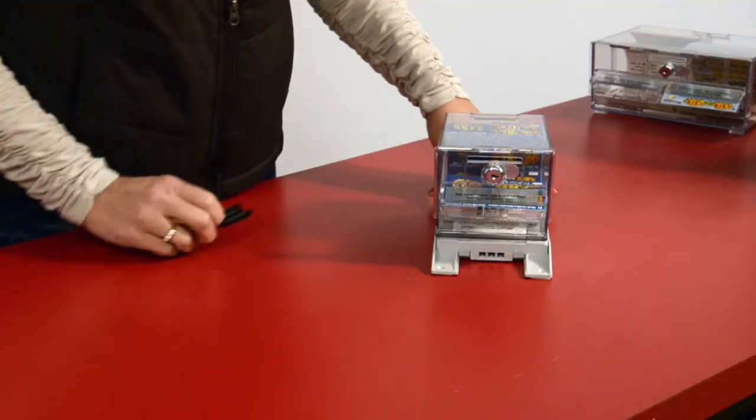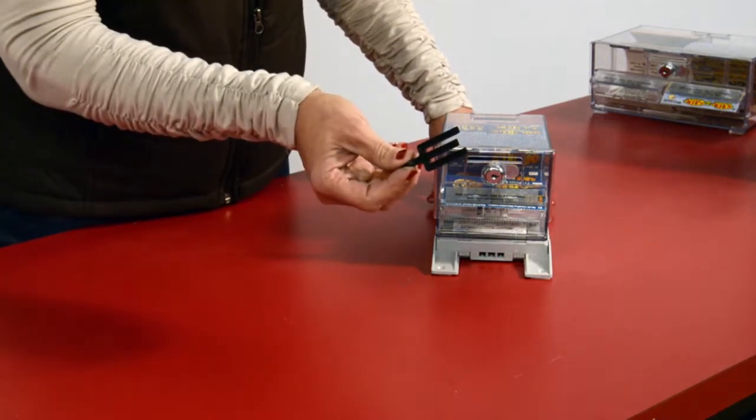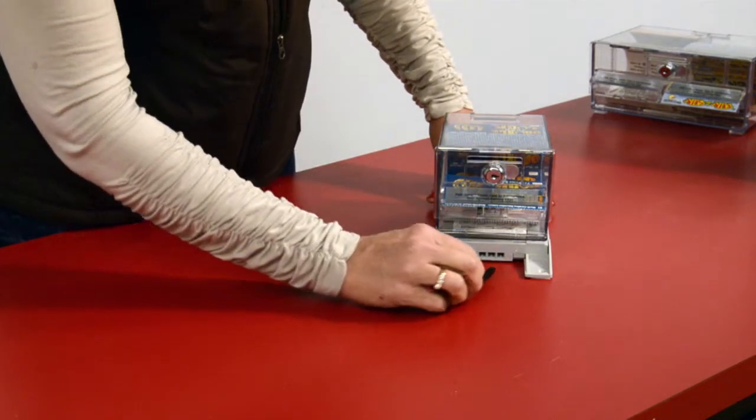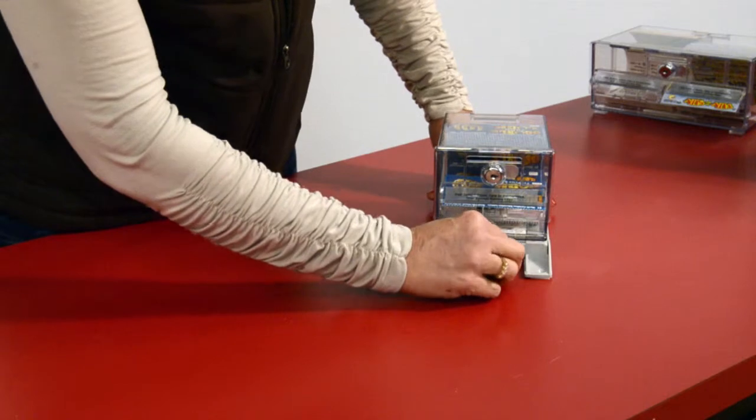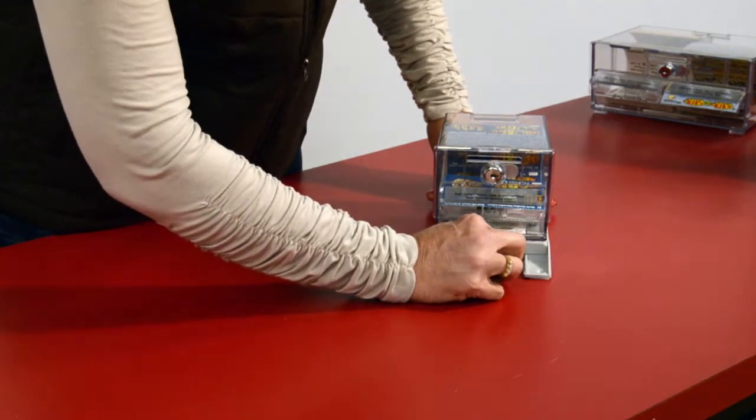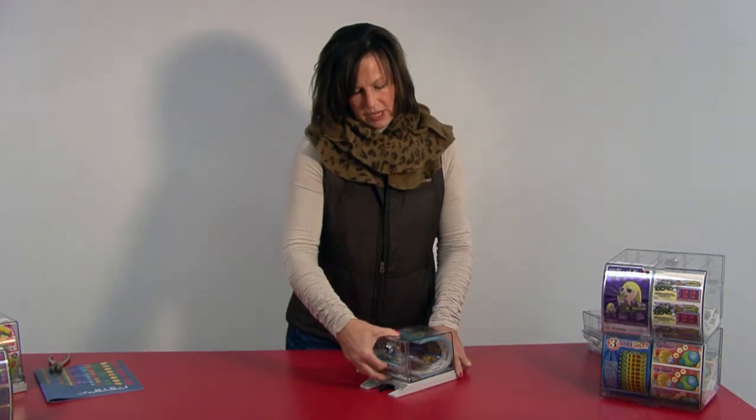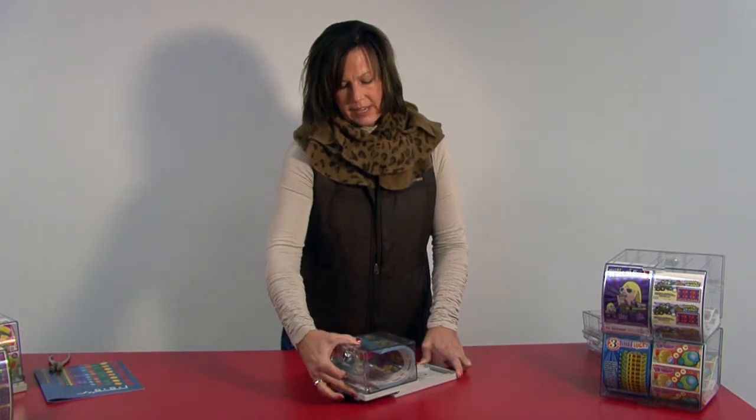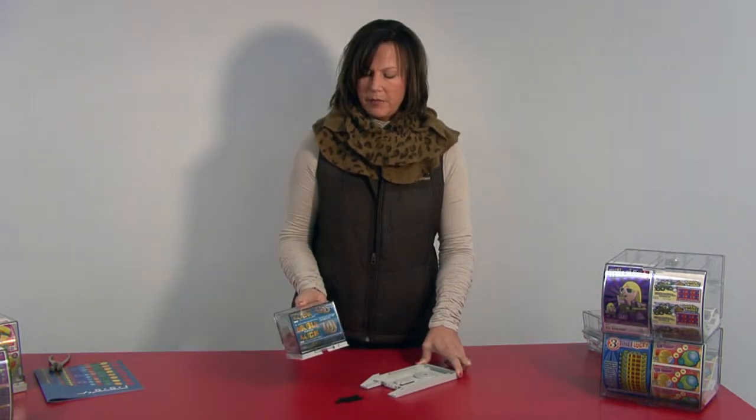To remove the dispenser from the lockable slide mount, you will take the black key provided with the lockable slide mount, place it in the lockable slide mount in the holes for the key, and slide the dispenser off of the slide mount.